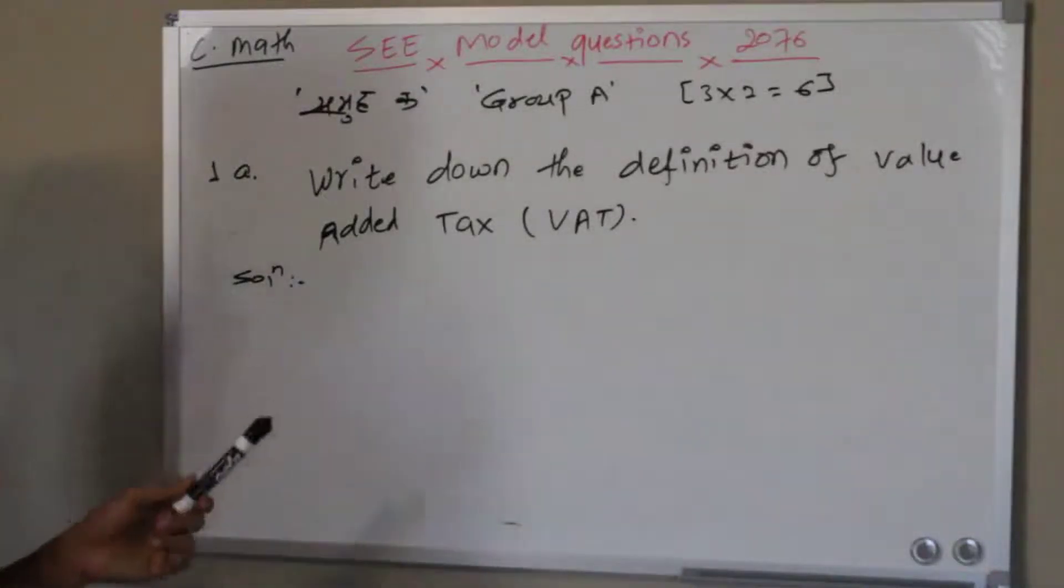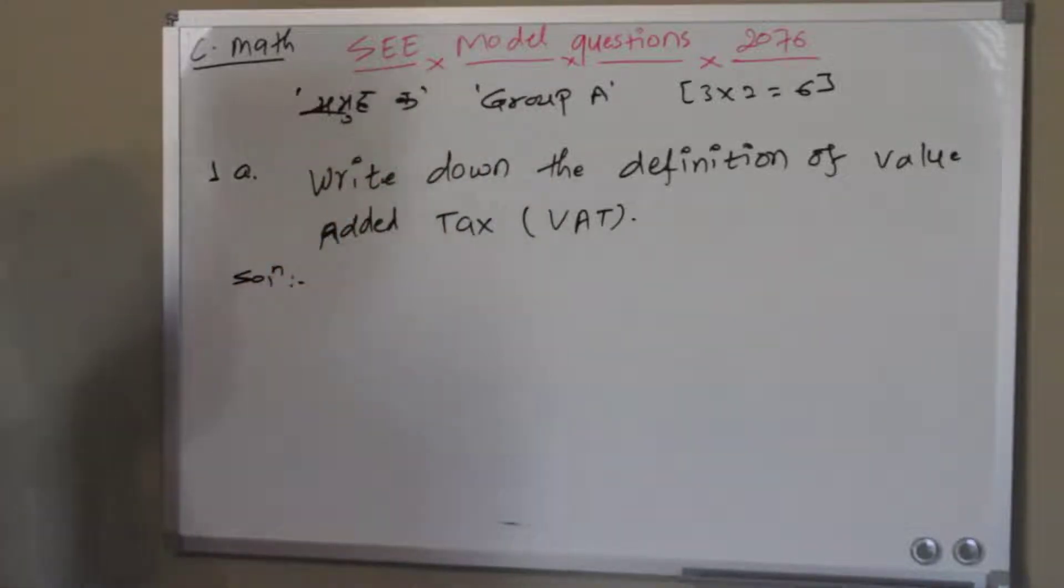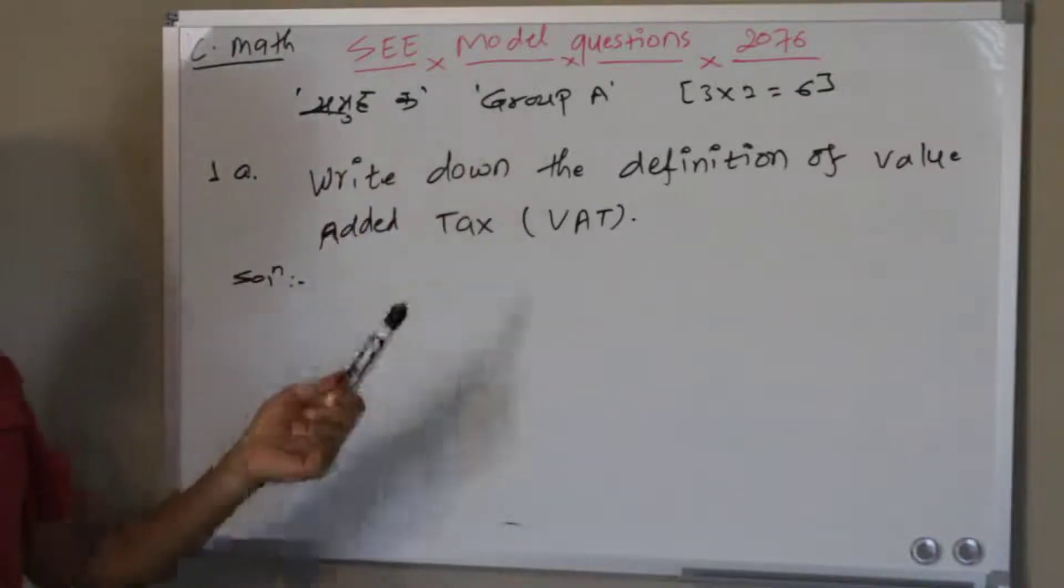Okay, this is compulsory math SEE model questions solutions. Now I'm going to start from Group A, which are short questions, very short questions.